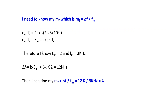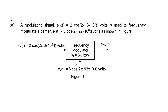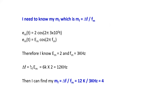The deviation frequency is equals to kf multiplied by Em. This kf is also given in the question, which is 6 kilohertz. So kf is 6k and Em is 2, therefore I calculate my deviation frequency which is 12 kilohertz.